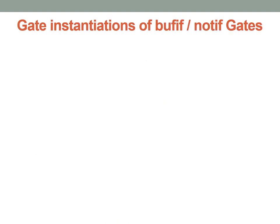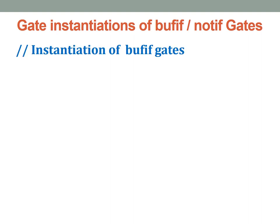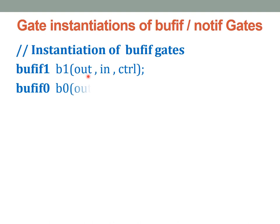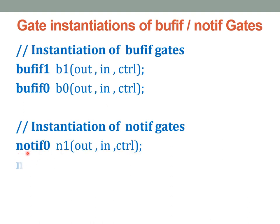Now let us look at how we do gate instantiations of these buff-if and not-if gates in Verilog. To instantiate the buff-if gates, we write 'buff-if1' followed by the instance name, then the output variable, followed by the input and the control signal. Similarly, for buff-if0, we write the name 'buff-if0', give a name, then list the output first, then the input and control signal. For not-if gates, 'not-if0' is listed as output, input, control; and 'not-if1' is out, input, control. We list the output variable first, then input, followed by the control signal as the additional input.